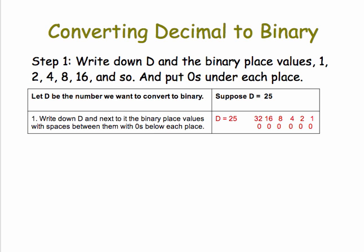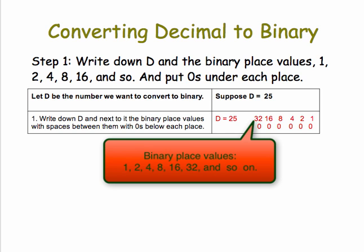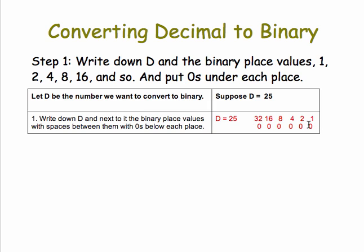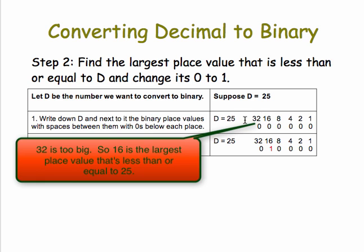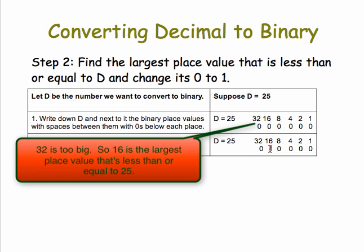Step one: write down d, and next to it, write down the place values 1, 2, 4, 8, 16, and so on, and place zeros under each place value. Step two: find the largest place value that's less than or equal to d and change its zero to a one. So in our case, d is 25 and the largest number here that's less than or equal to it is 16. So I'm going to change its zero to a one.